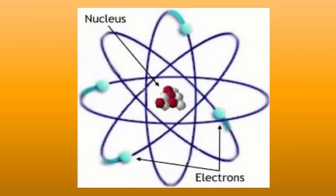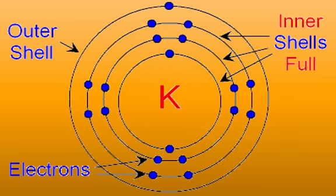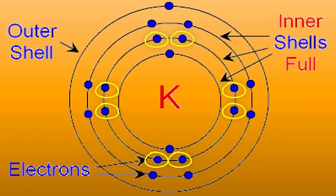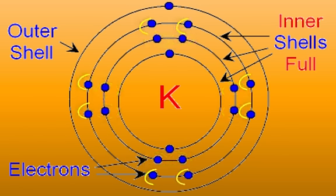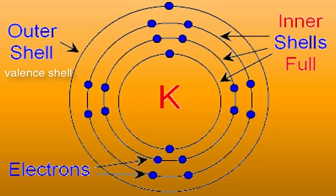The electrons of an atom are found in the electron cloud. The electron cloud contains shells or energy levels that each hold a maximum number of electrons. The first shell is closest to the nucleus and will fill with electrons before the other shells are filled. The first shell is filled when two electrons occupy that level. After the first shell is filled, the second level can hold up to eight electrons. After the second shell is filled, the third shell can also hold up to eight electrons. The outermost shell of any atom is called the valence shell, and it determines the ability of that atom to bond to another atom.